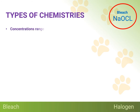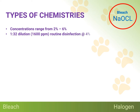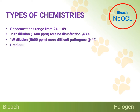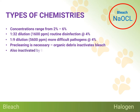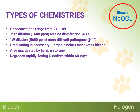Store-bought concentrations will range from 2% to 6%, which can lead to dilution confusion. A 1-to-32 dilution, or 1,600 parts per million, is recommended for routine disinfection. A 1-to-9 dilution, or at least 5,600 parts per million, is recommended for more difficult pathogens. Pre-cleaning is necessary because the presence of organic debris inactivates bleach. It is also inactivated by light and storage. It degrades rapidly, losing one half of its actives within 60 days of being manufactured. The EPA requires labeling stating that it degrades with age. When using it, it needs to be discarded every couple of hours.